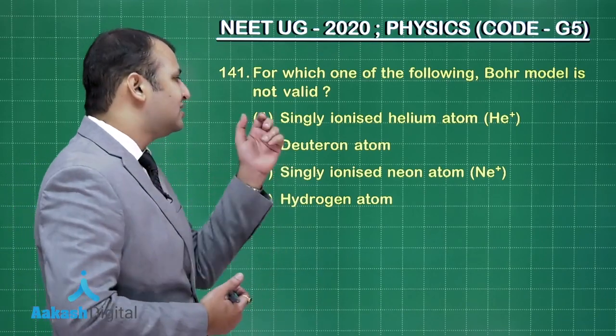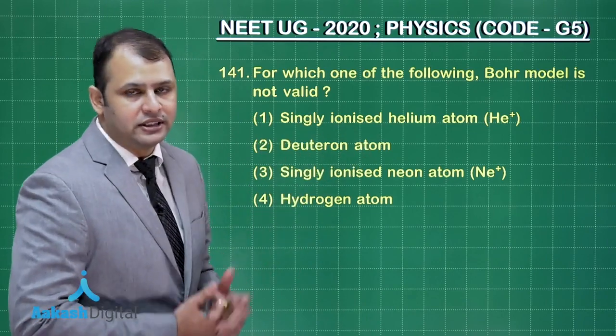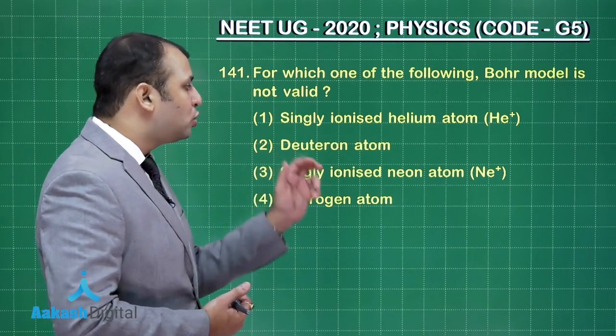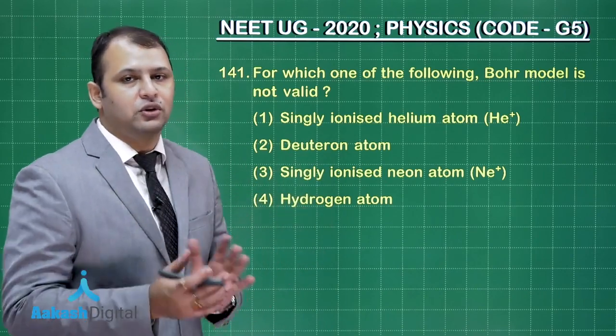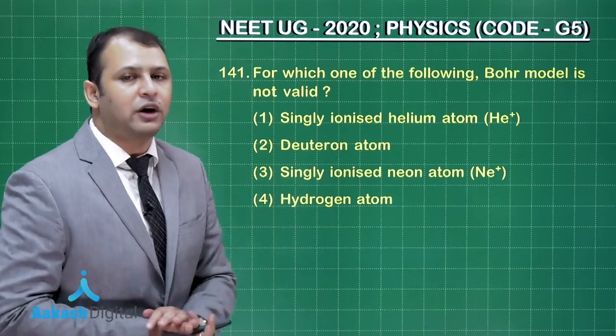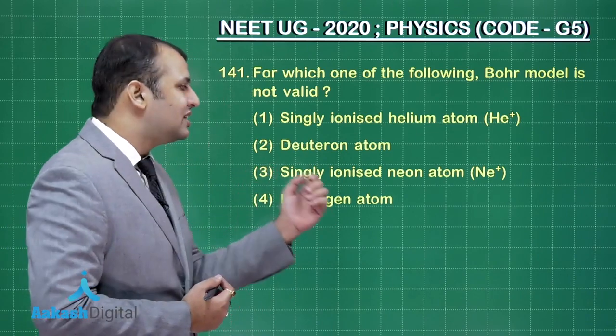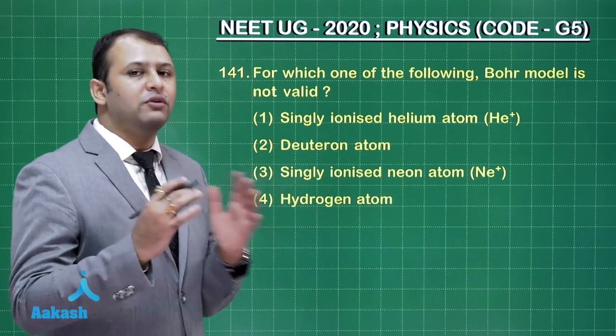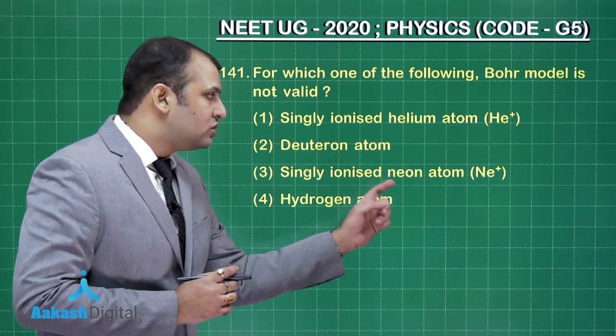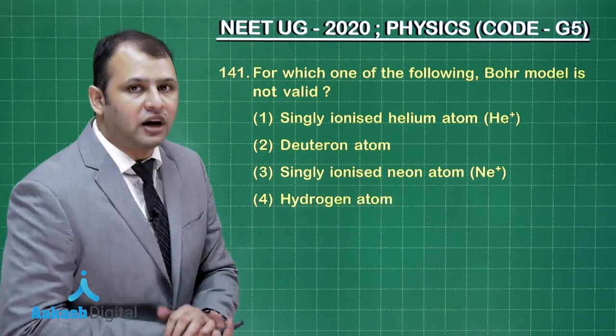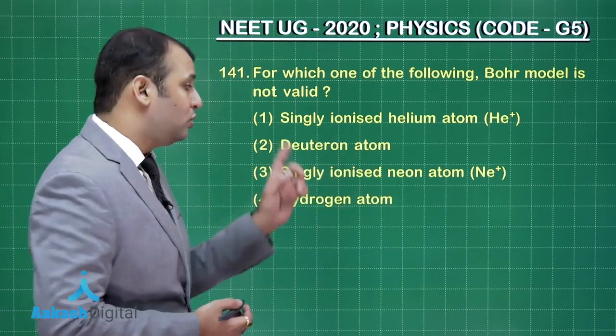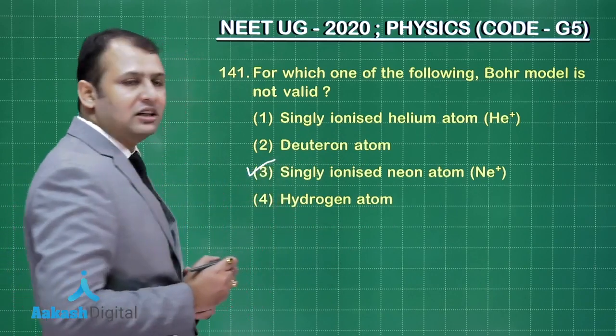Now here, for the first question, the singly ionized helium atom, yes it will satisfy the condition. The second is deuteron atom. Yes, due to its electronic configuration, it's an isotope of hydrogen, will satisfy the condition. When you talk about the third option, singly ionized neon atom, so neon configuration is 2.8. When it loses one electron it becomes a neon positive ion. That means the configuration becomes 2.7.